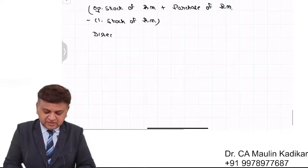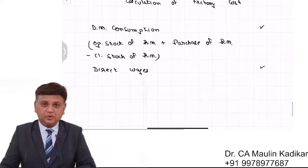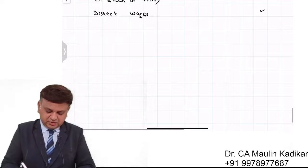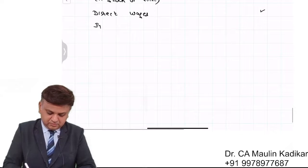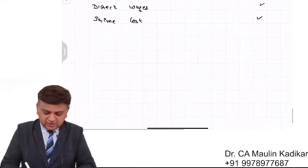Next is direct wages. Total of both of them is prime cost. Then we add factory overhead.